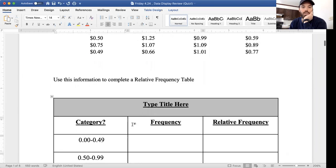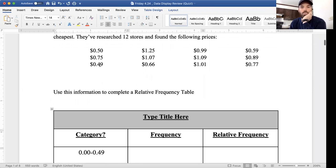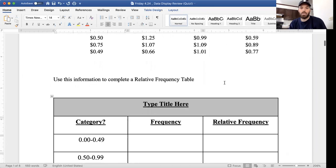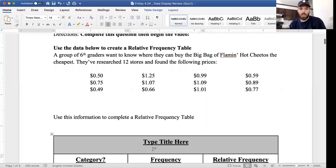Looking for our frequencies. Zero to 49 cents, just one. 50 to 99 cents: one, two, three, four, five, six, seven.